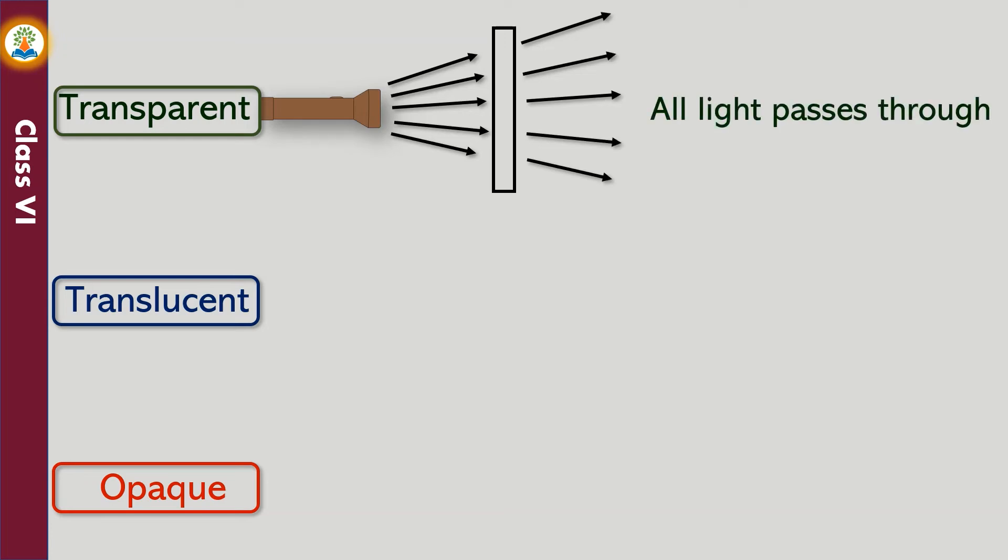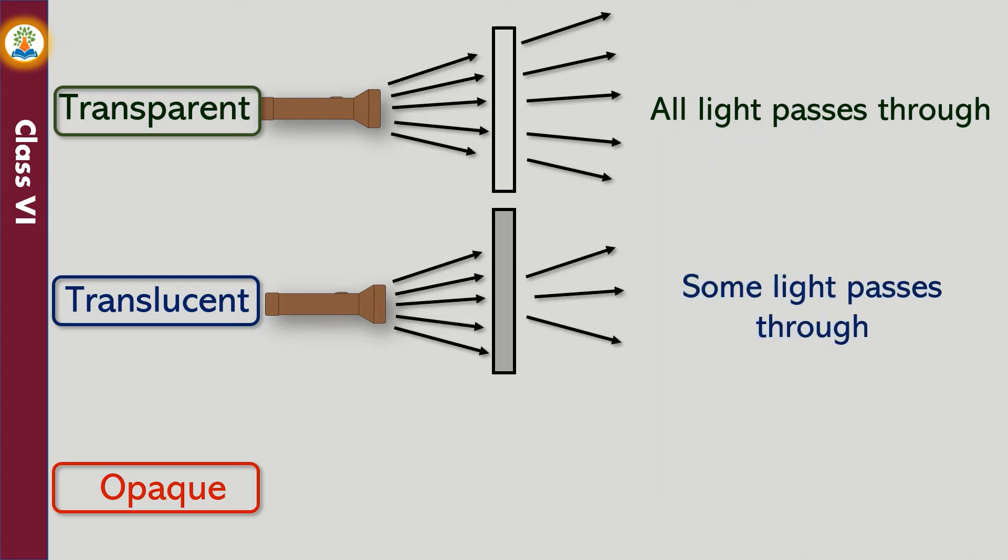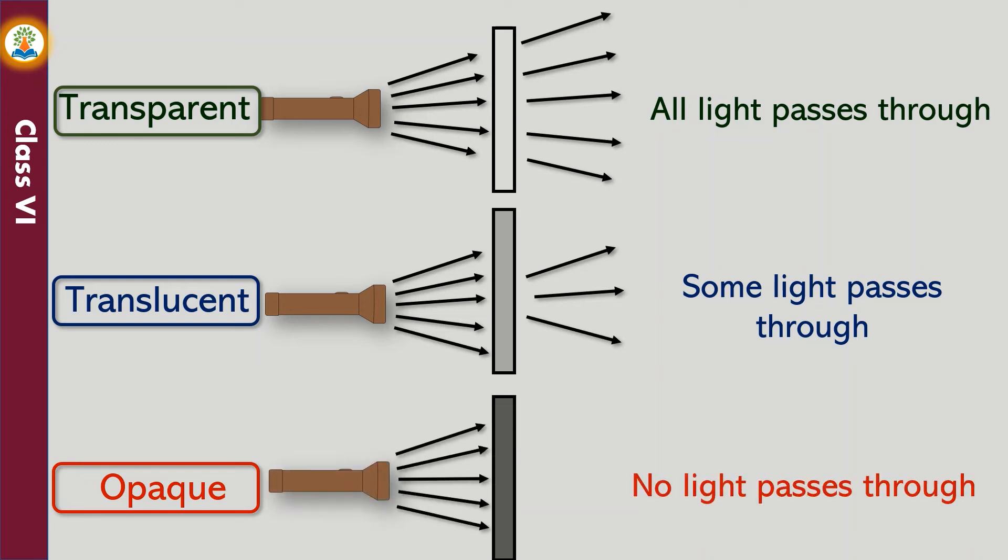Substances that allow light to pass through them completely are called transparent materials. Glass, air, clear water, and some plastics are examples of transparent materials. Substances that allow only a portion of light to pass through them are called translucent materials. Butter paper, tissue paper, thin plastic, frosted glass, and ice are examples of translucent materials. Substances that do not allow light to pass through them are called opaque materials. Wood, metal, and brick wall are examples of opaque materials.